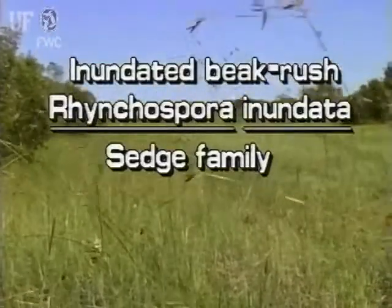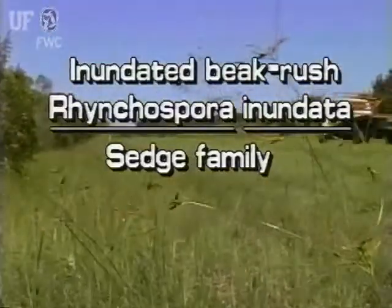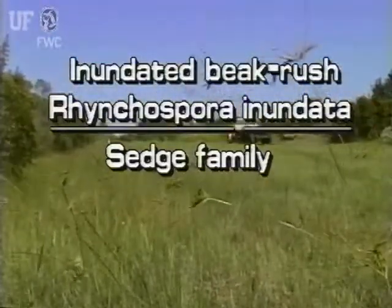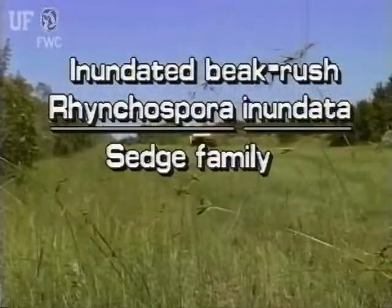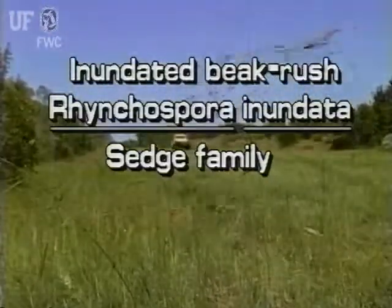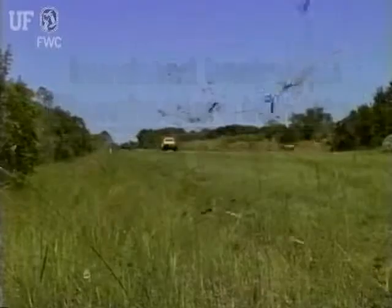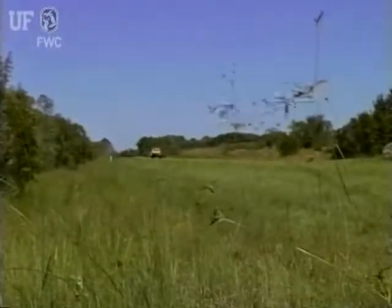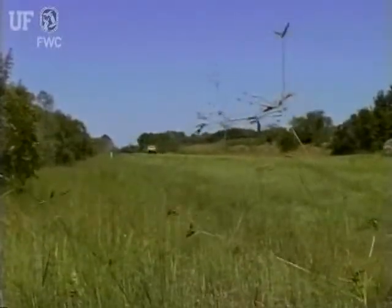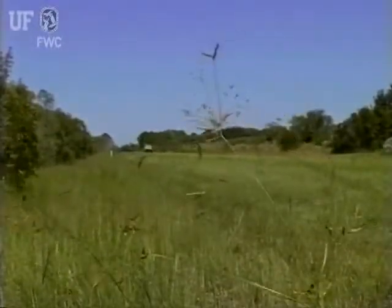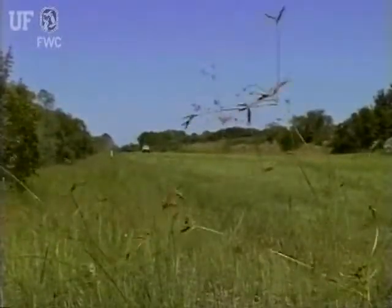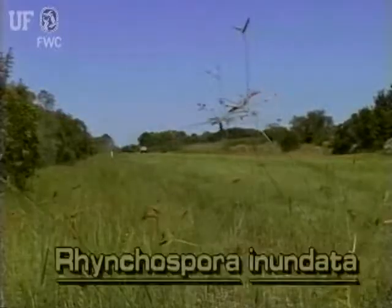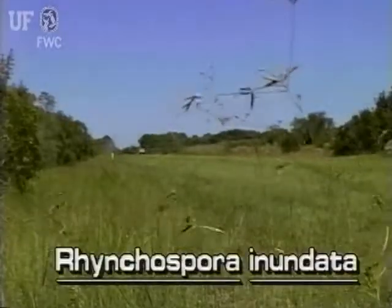Inundated beak rush, Rhynchospora inundata. The inundated beak rush grows in colonies in swamps, ponds, depressions, ditches and flatwoods all over Florida.